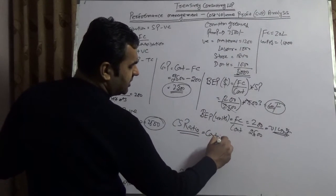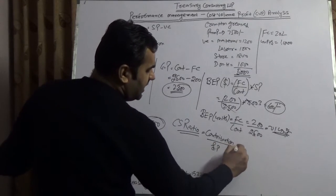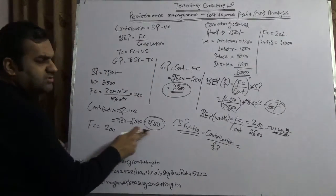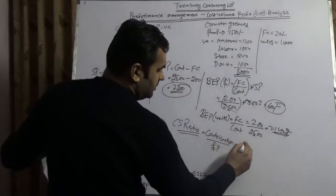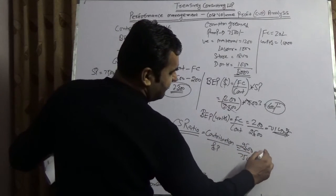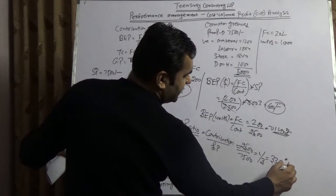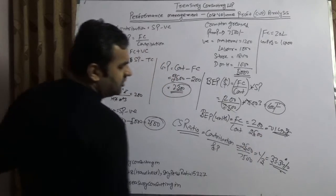This is contribution divided by selling price. Here, contribution is $2,500 and selling price is $7,500, which is roughly one-third, or 33.34%.